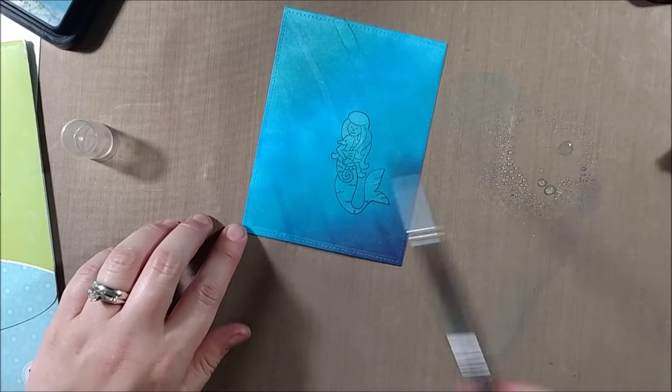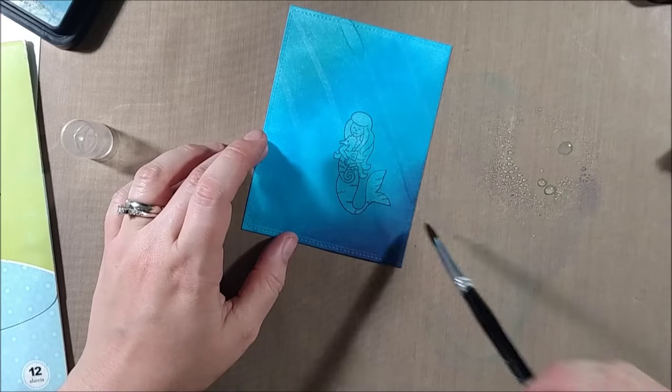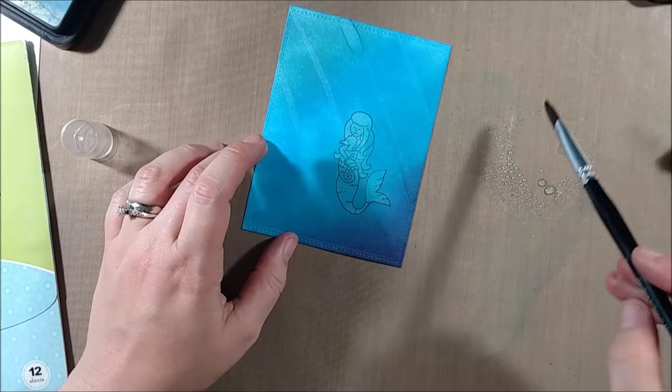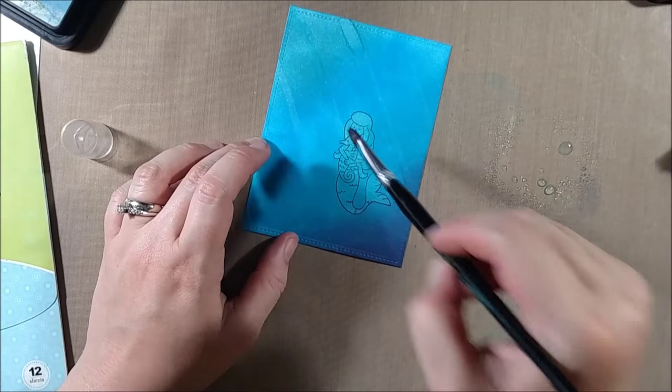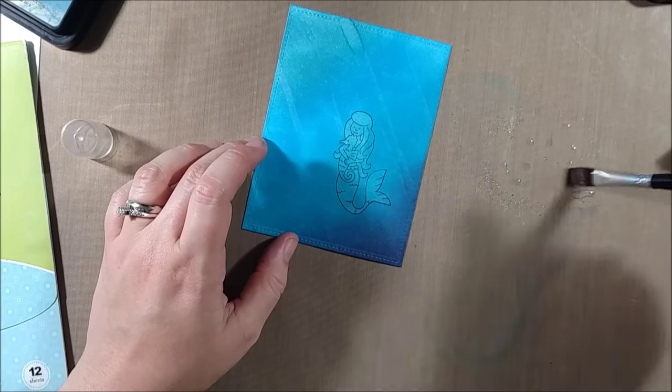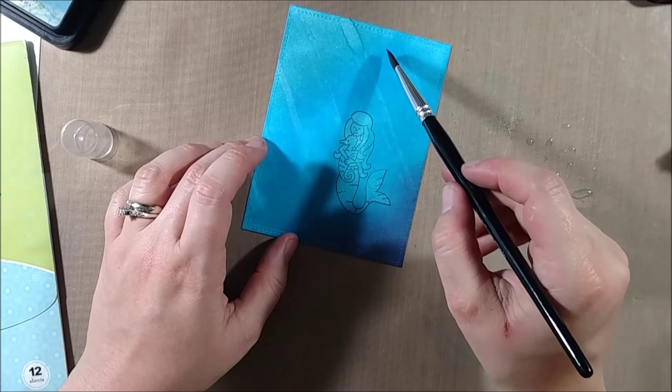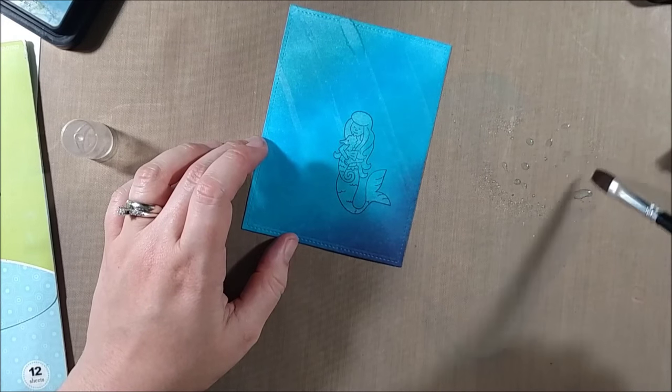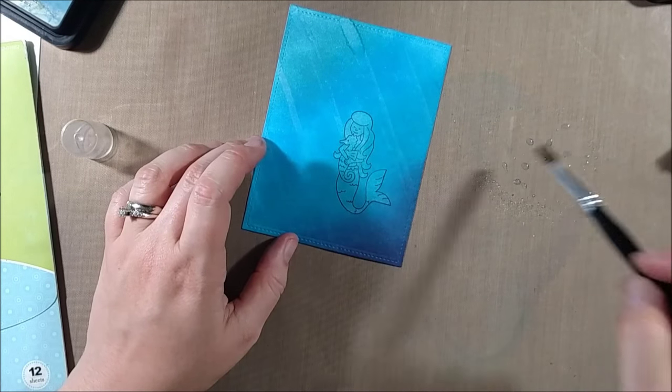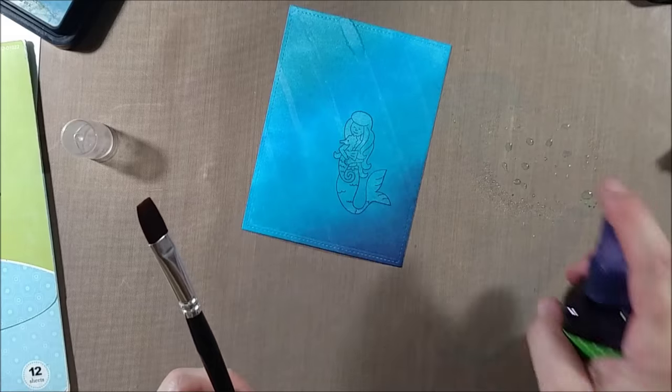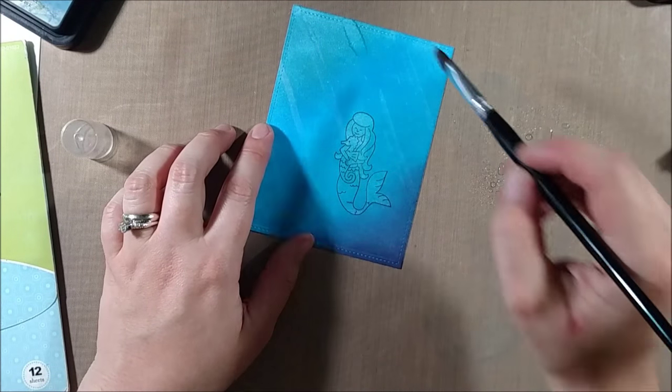So to create the effect of the light streaming into the ocean, I'm going to take advantage of the fact that Distress ink reacts with water and pushes the color away where you add the water. So I'm just taking a paintbrush and some plain water and creating light lines from the top left to the bottom right. I chose to do that because that's the direction that the mermaid is facing. So she would essentially be facing towards where the sun is streaming in. And also because it's pretty visually pleasing to the eye.